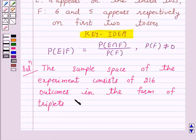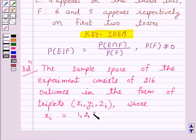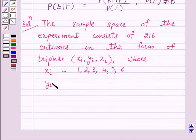x_i, y_i, z_i, where x_i equals 1, 2, 3, 4, 5, 6, and y_i equals 1 through 6, and z_i equals 1 through 6.